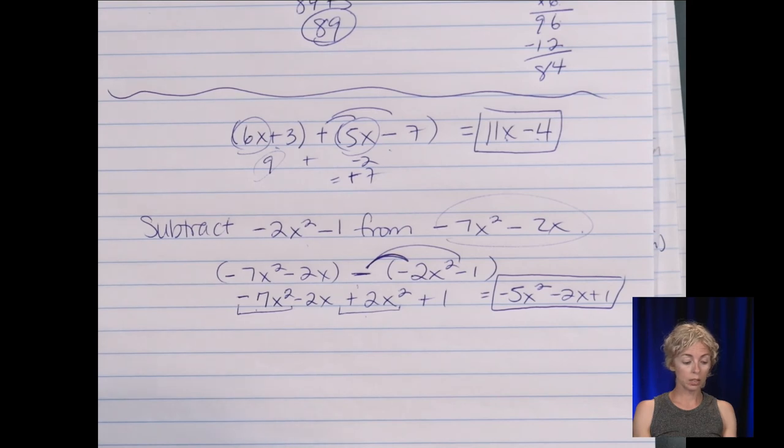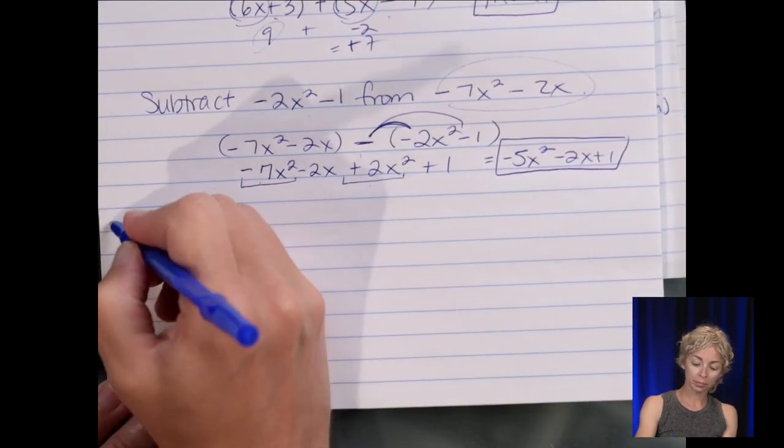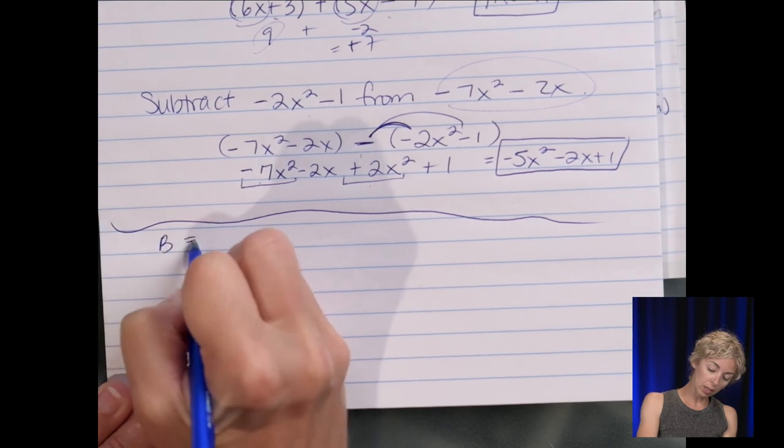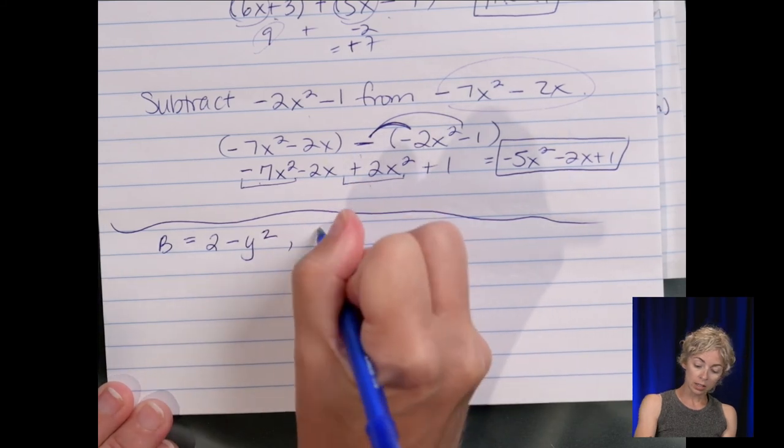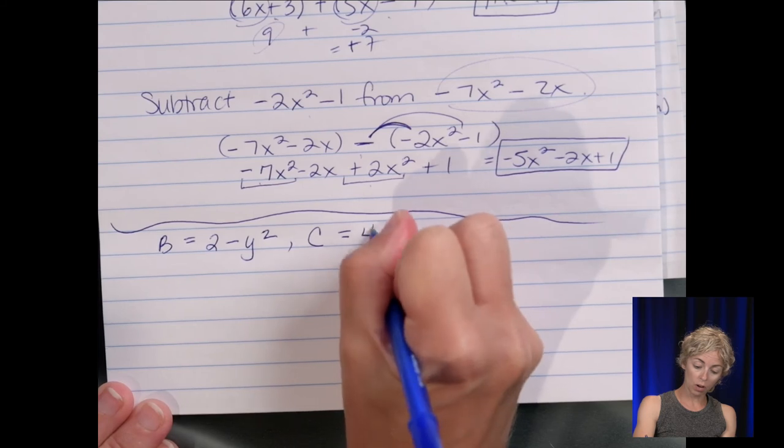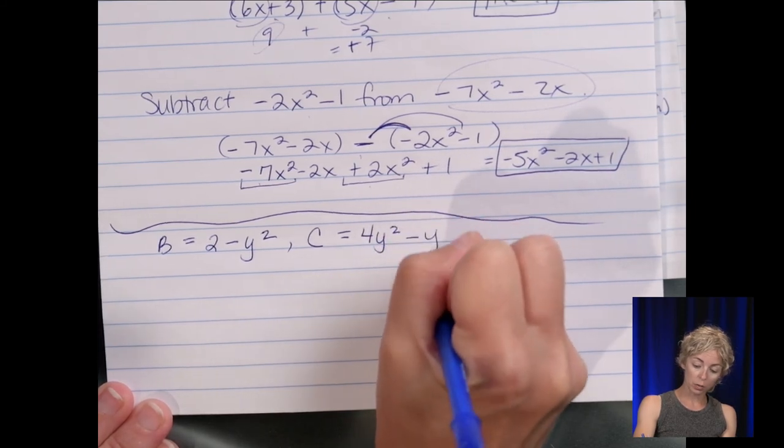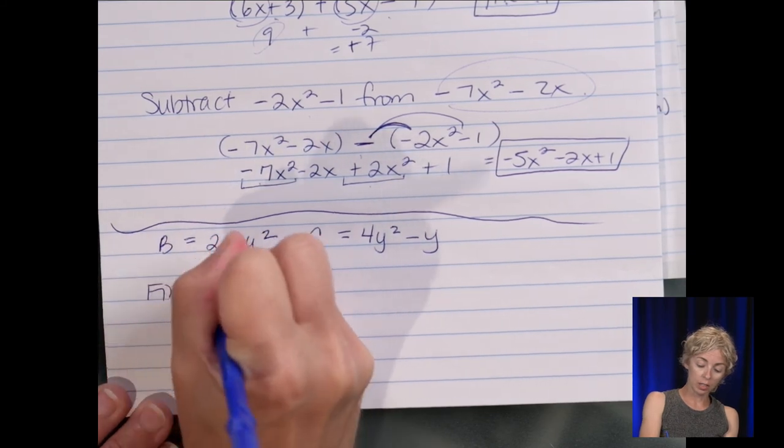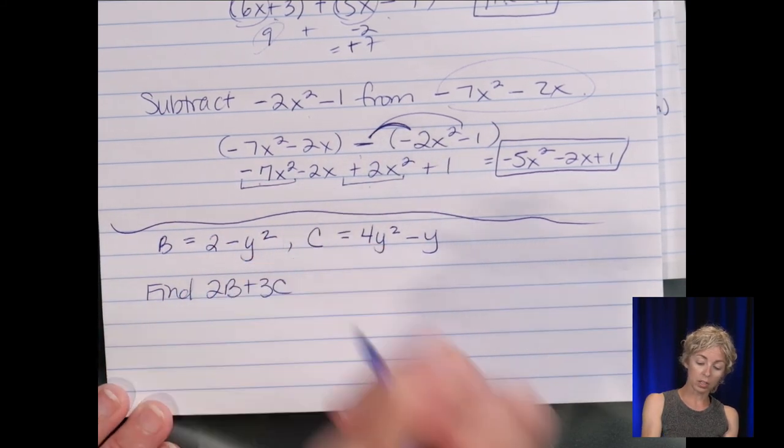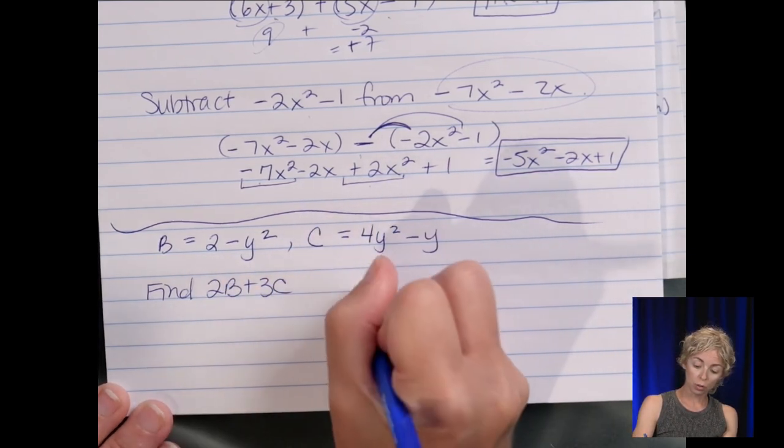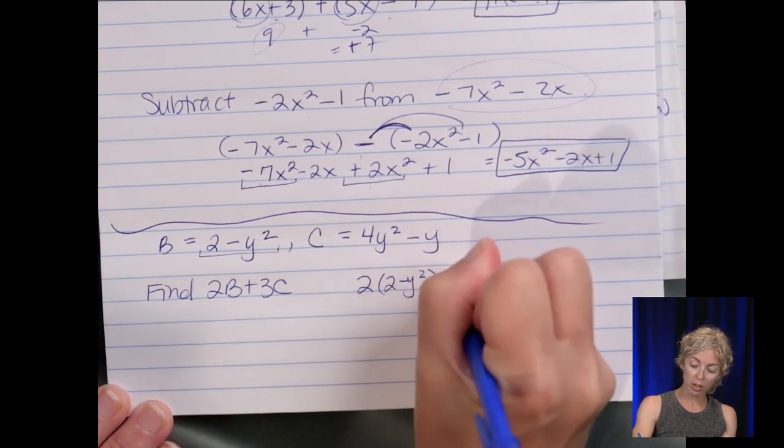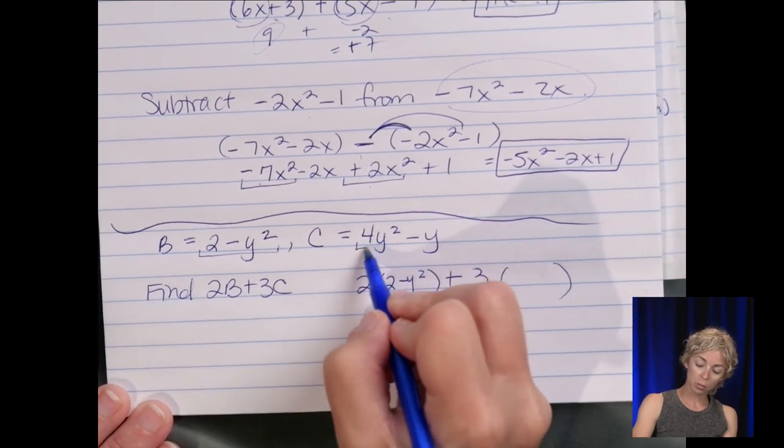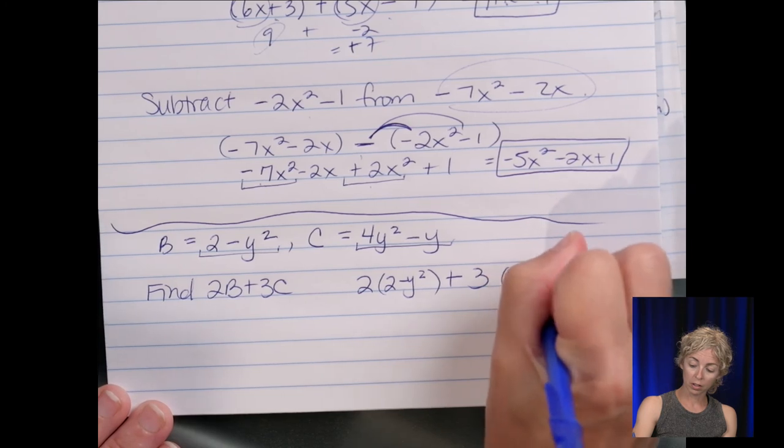Okay so adding subtracting and then last let's say that b equals two minus y squared and c equals four y squared minus y. And I want you to find two b plus three c. So that means we're going to do two substitute this binomial in for b. Two times two minus y squared plus three c. So where c is we're going to substitute the four y squared minus y.